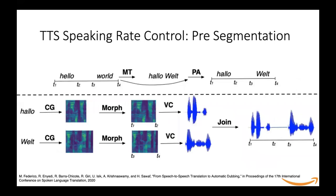In this paper, we experiment with and compare a pre-segmentation approach from the paper 'Speech-to-Speech Translation to Automated Dubbing' (2020) with the more structured post-segmentation approach. Consider the sentence 'hello world,' where 'hello' runs from t1 to t2 and 'world' from t3 to t4, and t3 minus t2 is the pause duration. The machine translation system converts this to the target language, the prosodic alignment module identifies phrase and pause durations, and 'hello' maps to its translation while 'world' maps to its translation — though these can also be multi-word phrases.